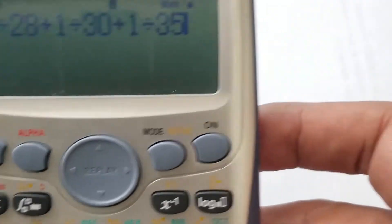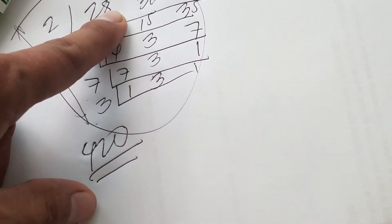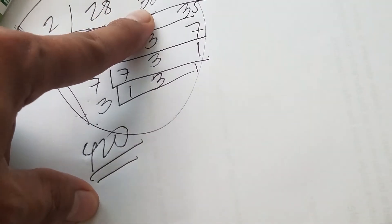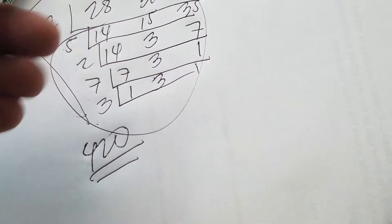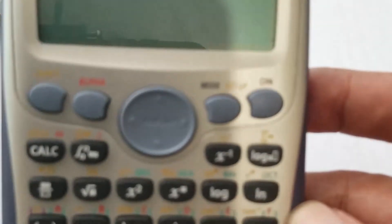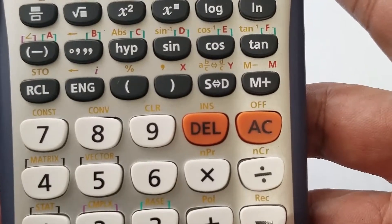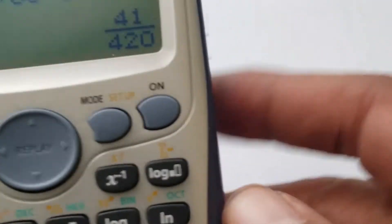So I'm just simply, 1 plus 28 divided by 1 plus 1 divided by 30 divided by plus 1 divided by 35. So let's check if we can get the 420. Press equal and you have 41 over 420. You get the denominator and that's your final answer for the LCM of the three